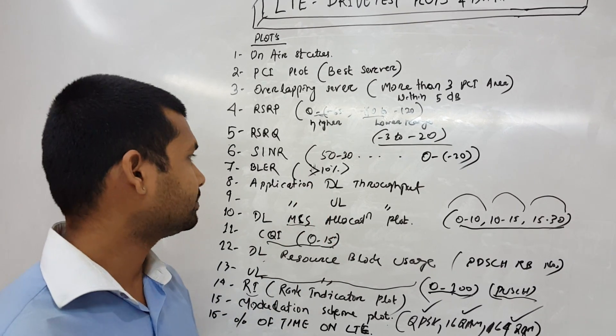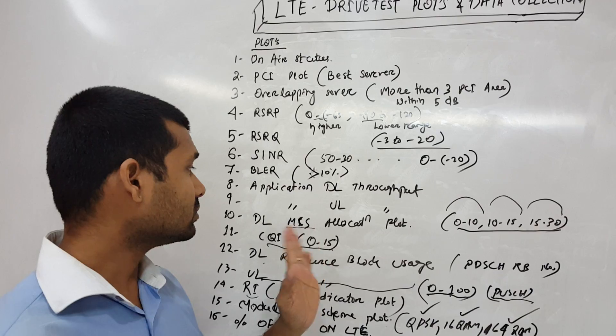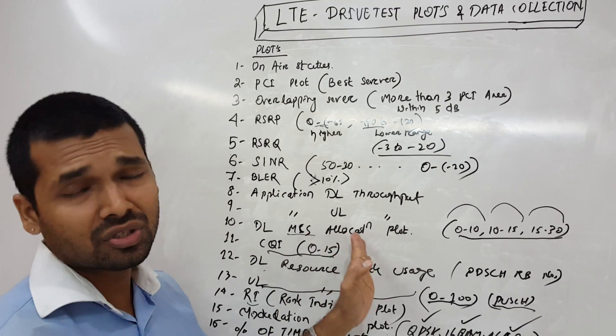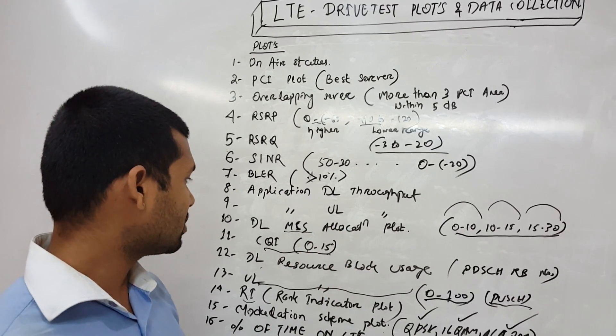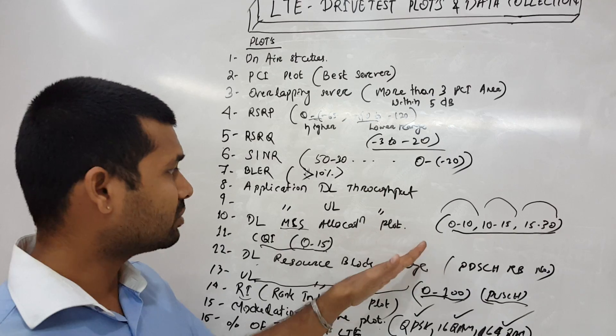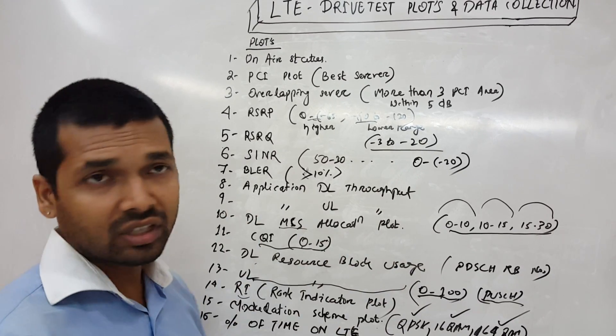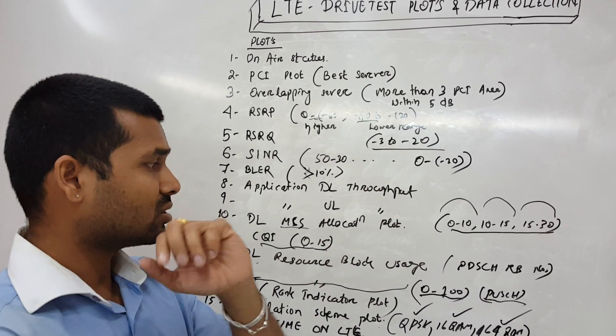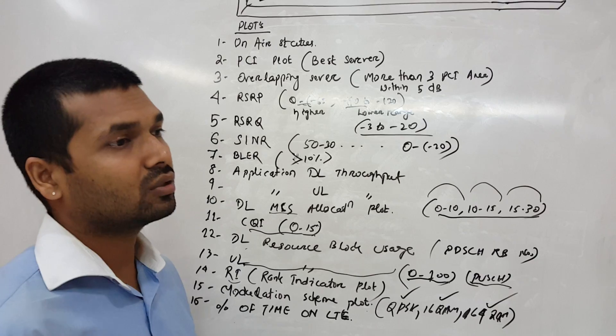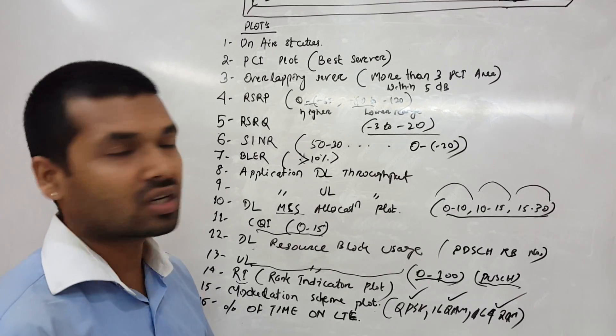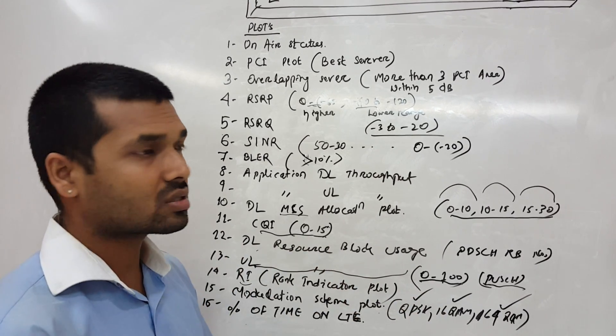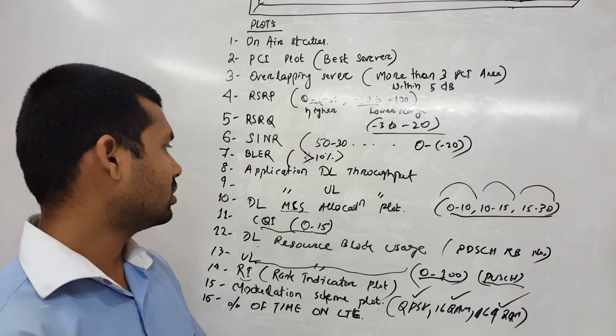Then application downlink throughput, application uplink throughput, and downlink MCS allocation. MCS and CQI help the scheduler every TTI to schedule the transmission - which modulation scheme to be used and how the users are to be allocated in the resource blocks. These two are very important.